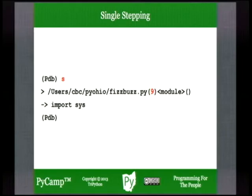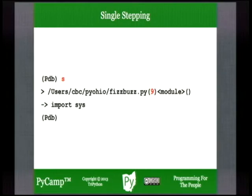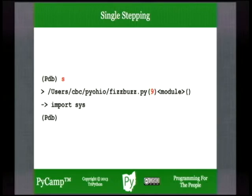'S' is the debugger command to execute the statement at the instruction pointer — the next statement to be executed. When you do that, Python will take that multi-line string and create the doc string for the module, binding it to the module's __doc__ attribute. The debugger will show you the next statement to be executed, which is the import in fizzbuzz.py. It will show you the complete path to that module and that the last thing evaluated was a module object.